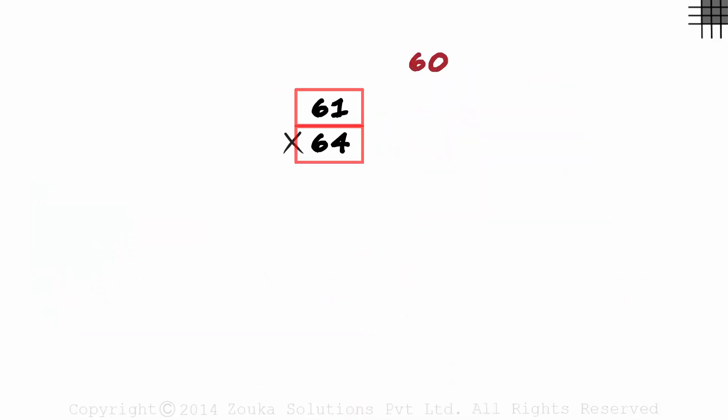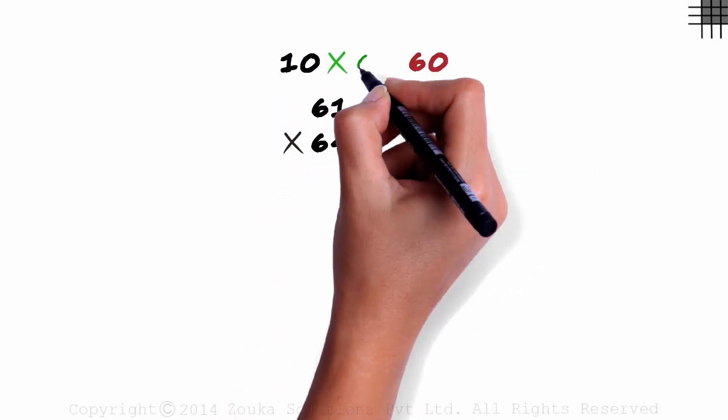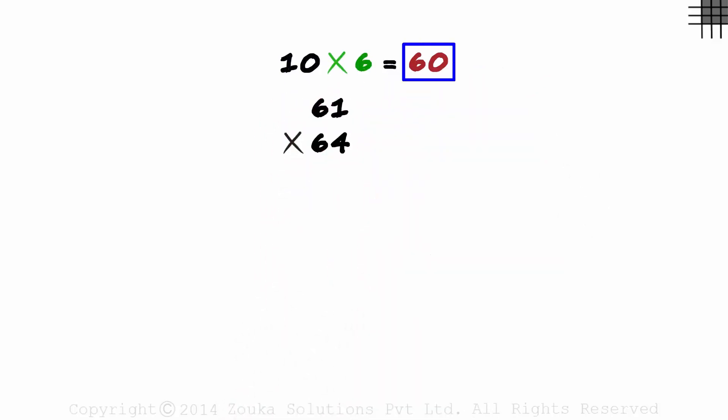Both numbers are close to 60, and 60 is a multiple of 10. 10 times 6 is equal to 60. That's what we mean by a multiple of power of 10.